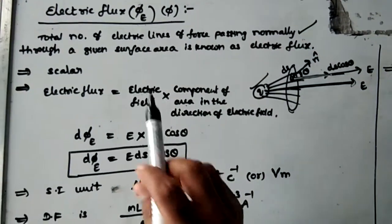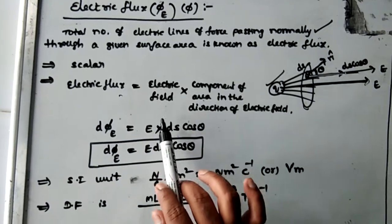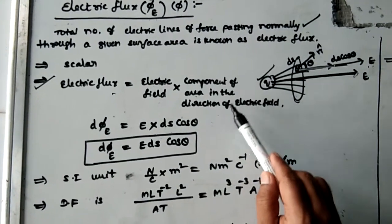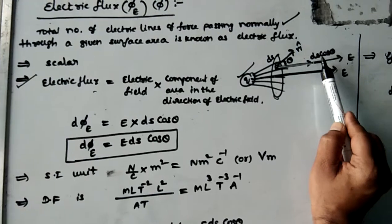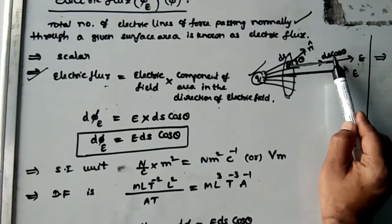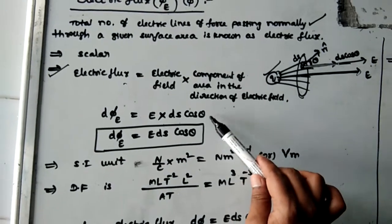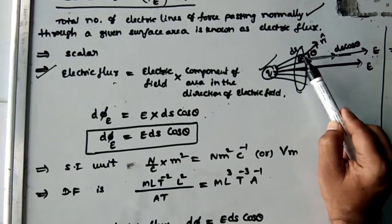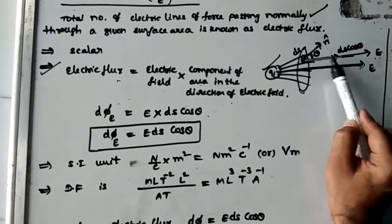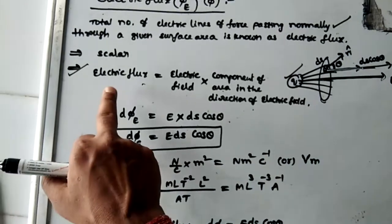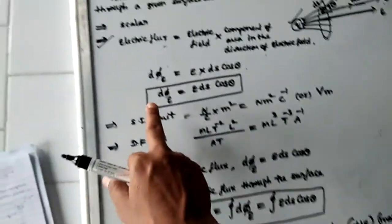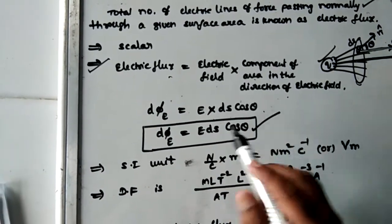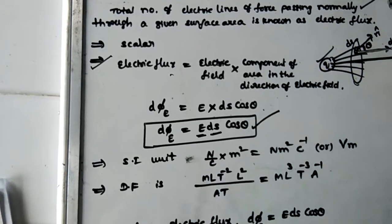That is why, when defining electric flux, it is defined as the electric field multiplied by the component of area in the direction of the electric field. The component of area in the direction of the electric field is ds cos theta, and the electric field is E. Through a small surface area, a small number of lines of force pass, giving small electric flux d phi E. So d phi E = E ds cos theta, where theta is the angle between electric field E and area element ds.